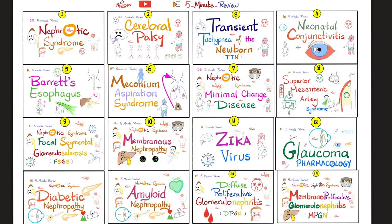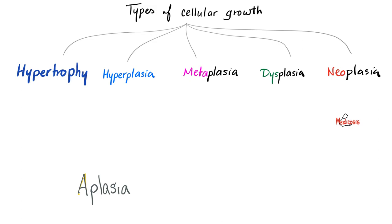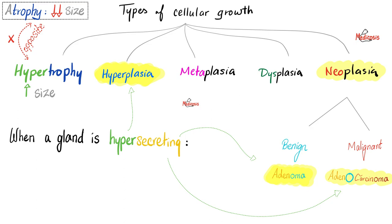Please watch the videos in this playlist in order. What is cancer? Cancer is a mass. Cancer belongs to neoplasia. Neoplasia could be benign or malignant — benign such as adenoma, but the malignant is adenocarcinoma. So when I say colonic adenoma, it's benign, but colon adenocarcinoma is cancer.